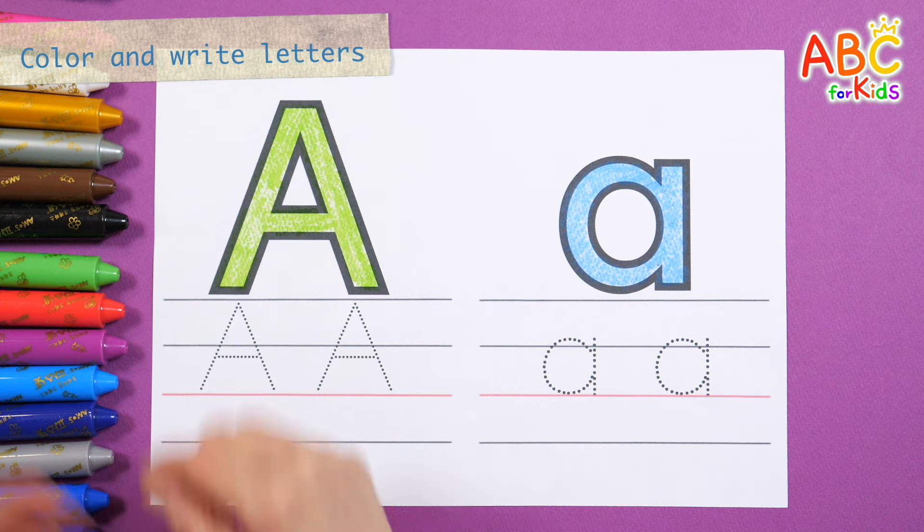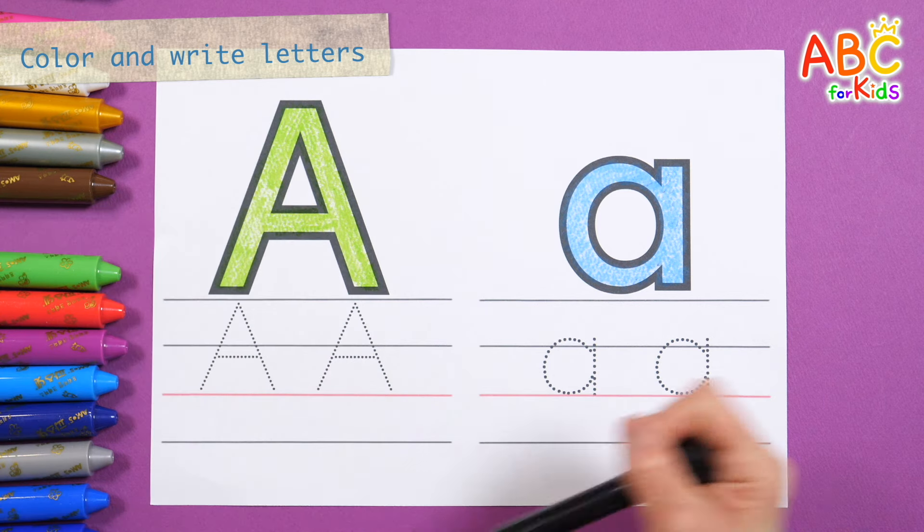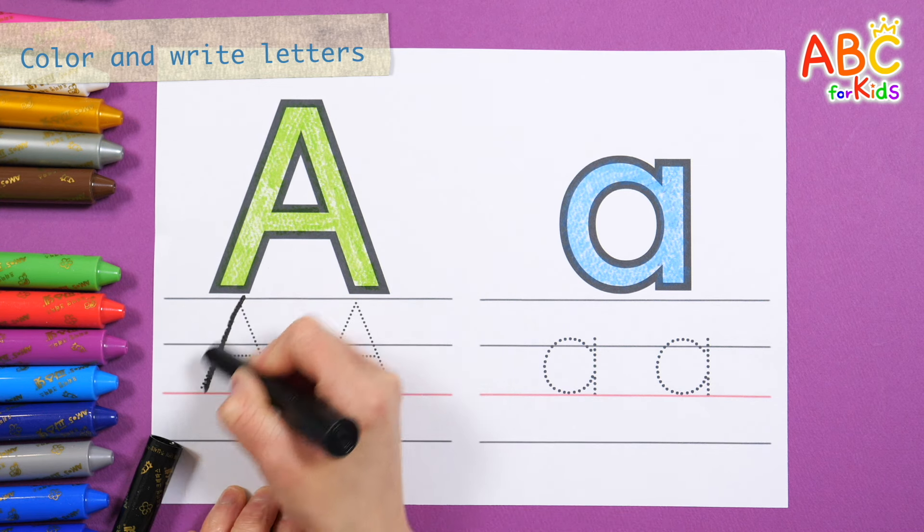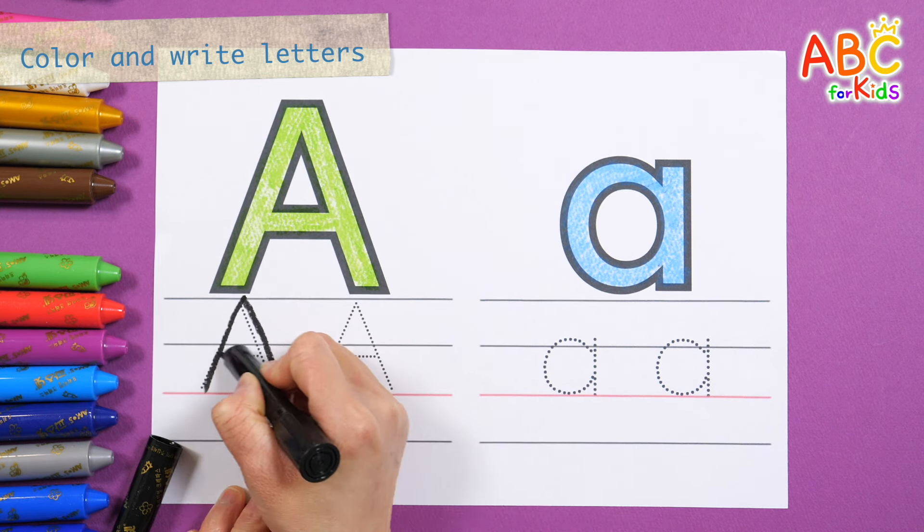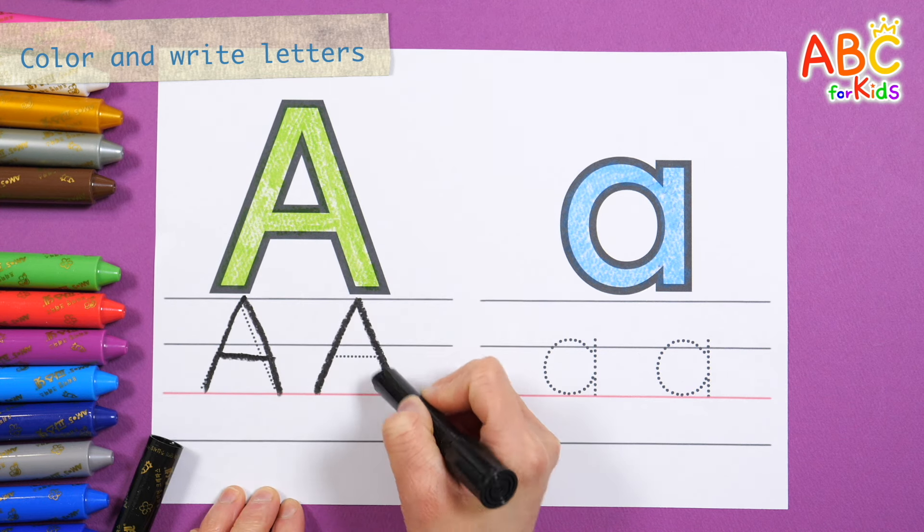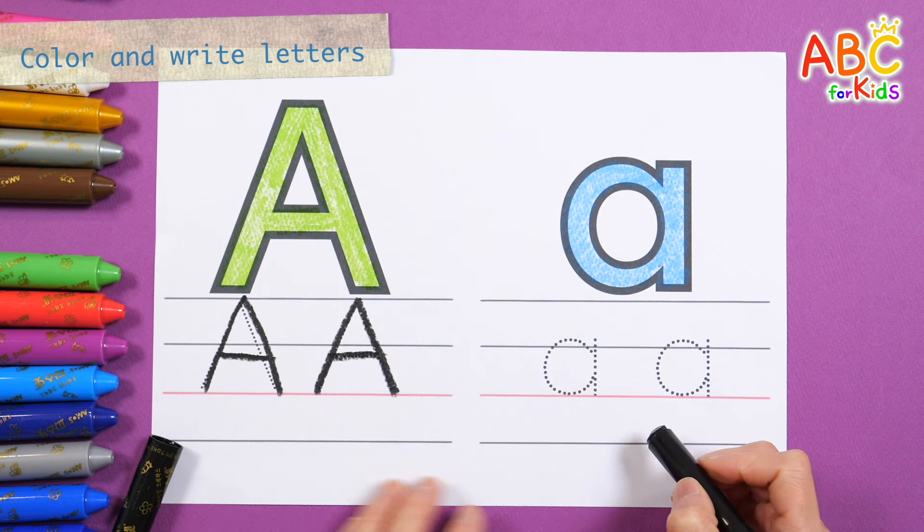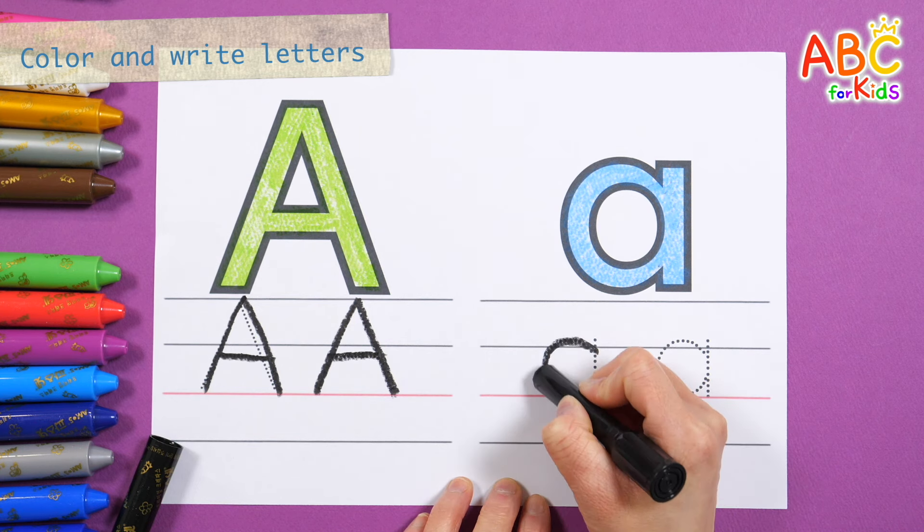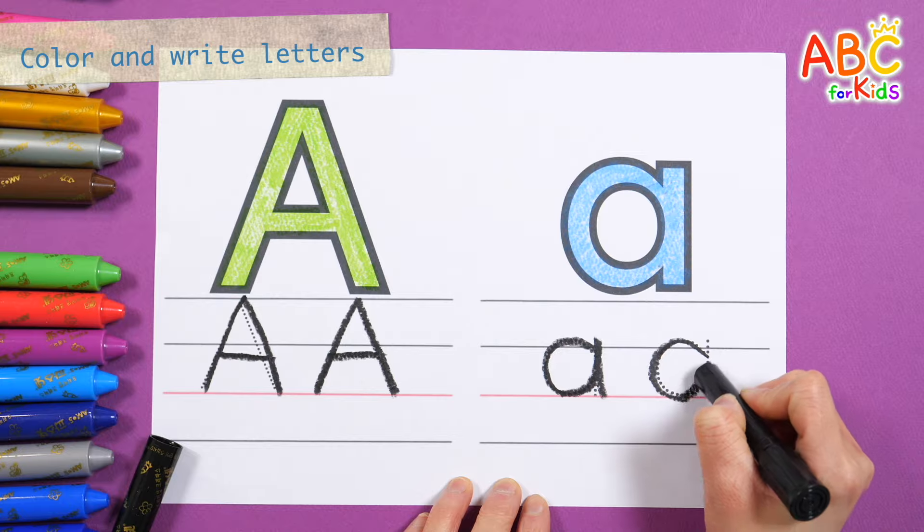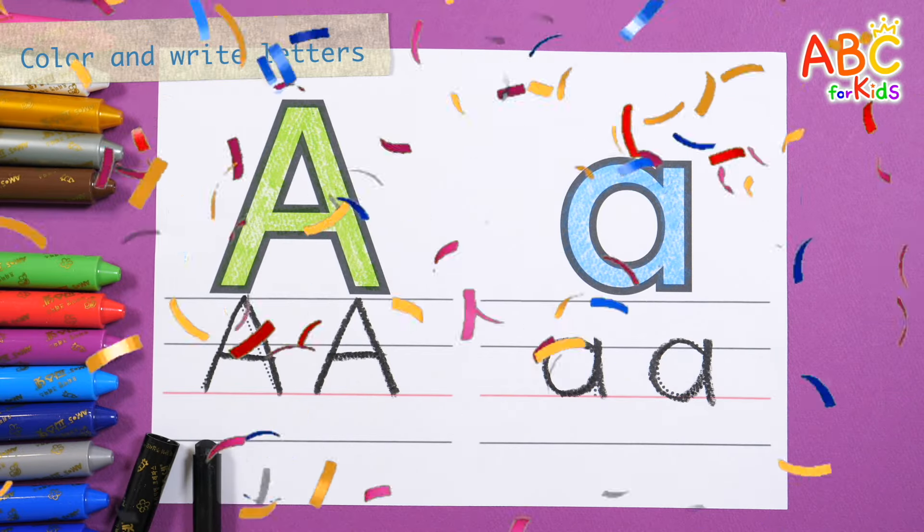This time, let's write the letters along the dotted lines with black crayon. Uppercase A. Old MacDonald had a farm, E-I-E-I-O. Lowercase A. Great job!